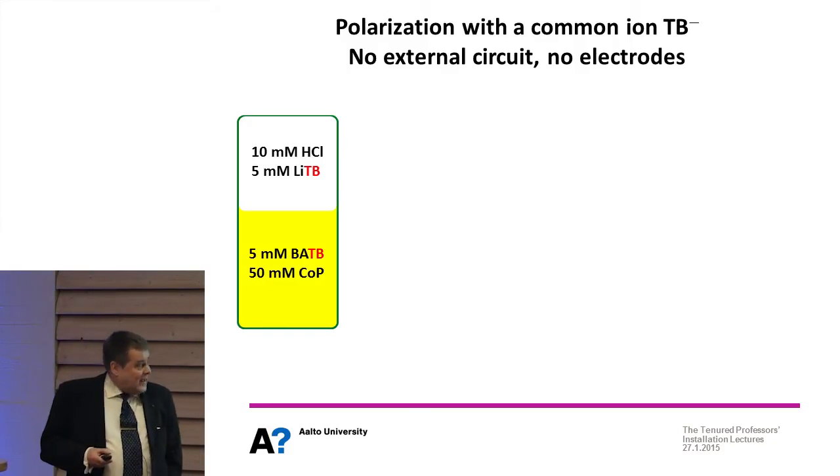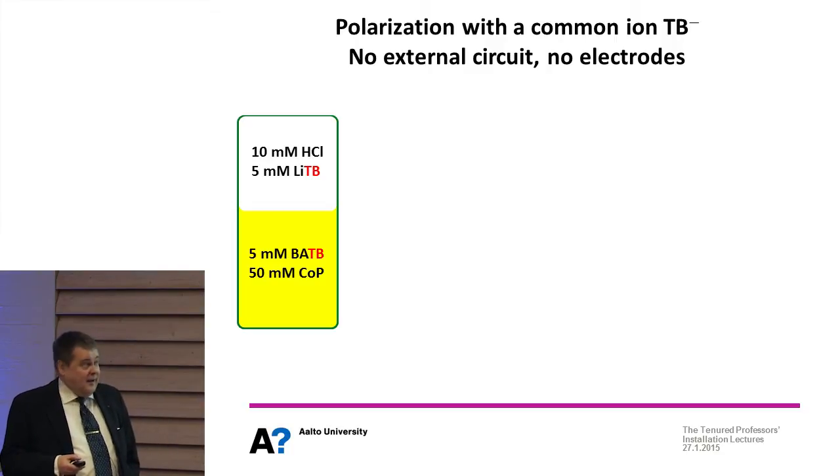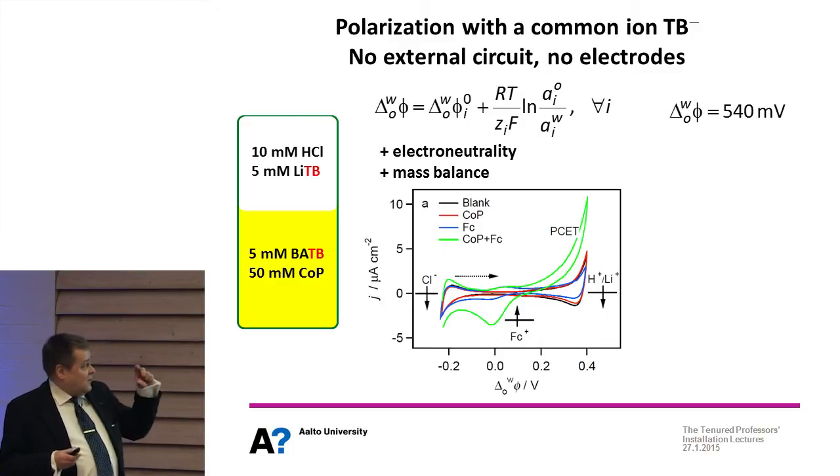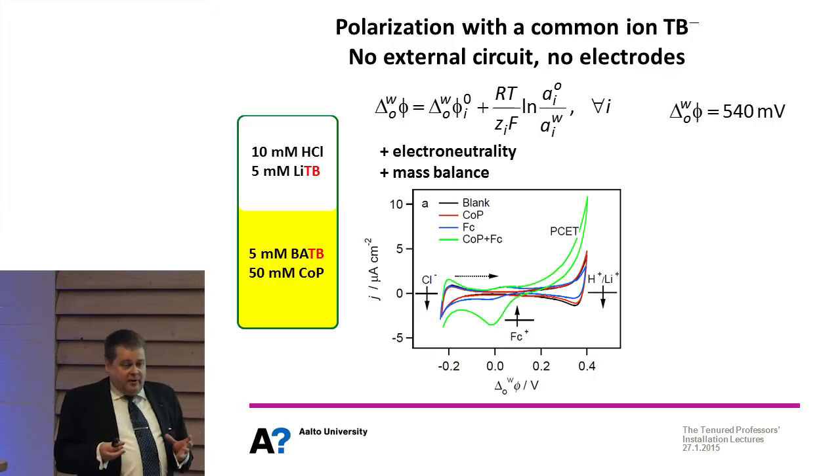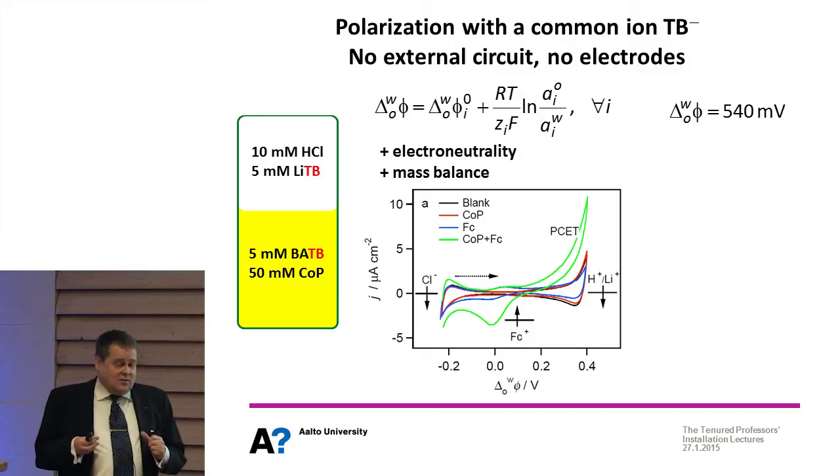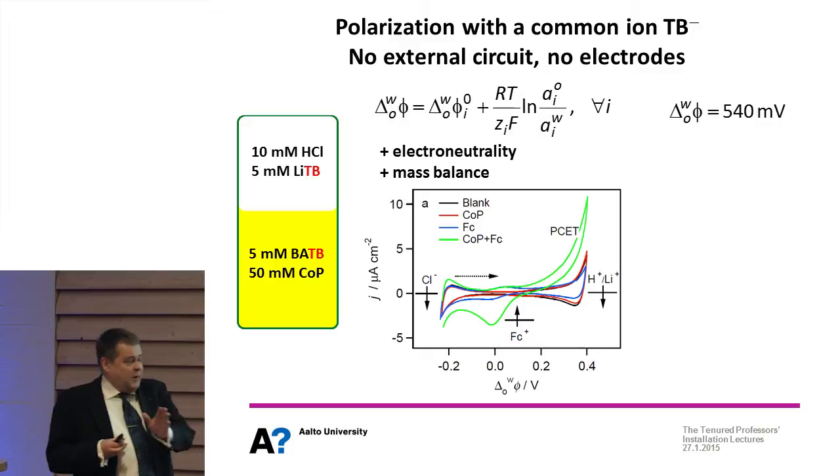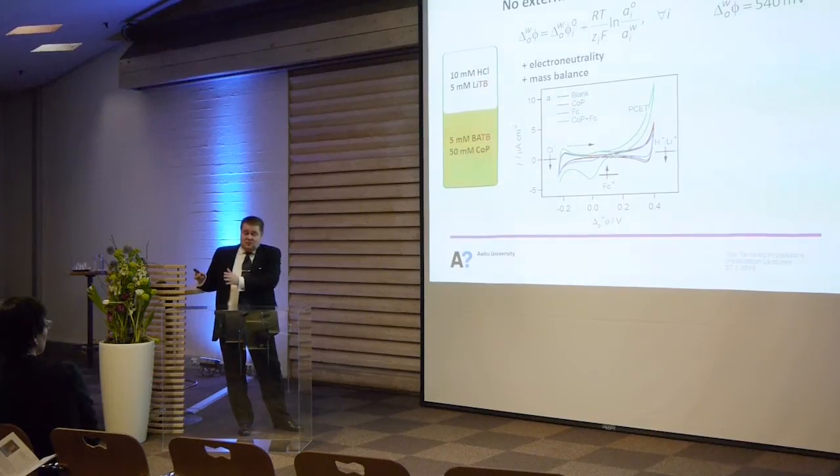We put a small flask and put lithium TBATPFB in aqueous phase and BATB in the oil phase in the lower phase. If we shake them, we are able to calculate what is the voltage of that interface or potential drop across the interface - we cannot measure it, we can only calculate it from the theoretical values. It appears that the value of this partitioning equilibrium makes a galvanic potential difference of 540 millivolts, well beyond the positive limit in the region where we have oxygen reduction taking place.